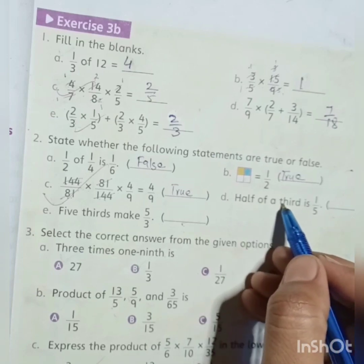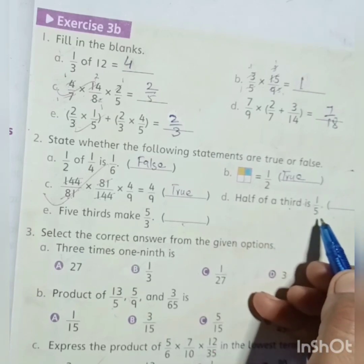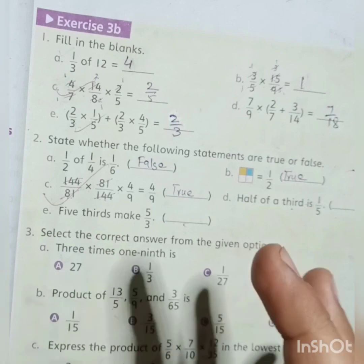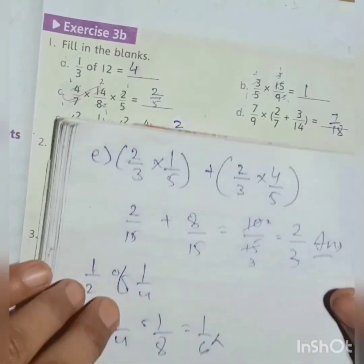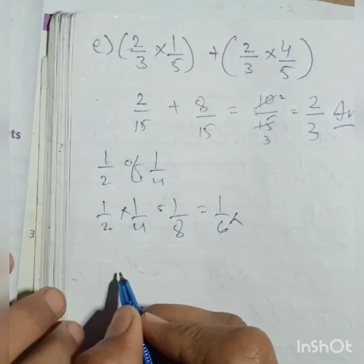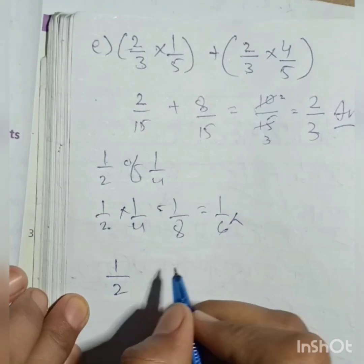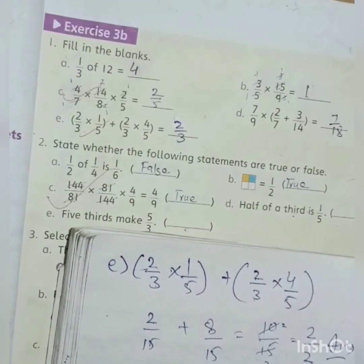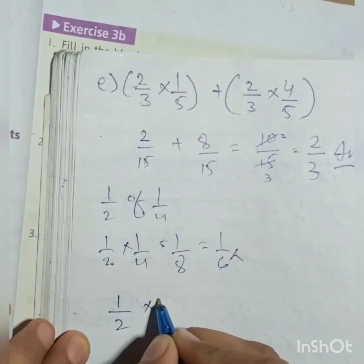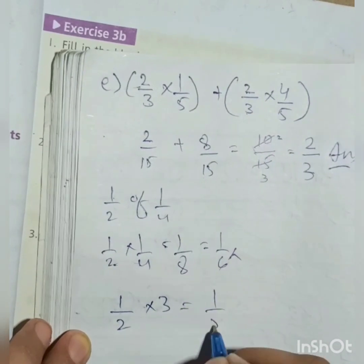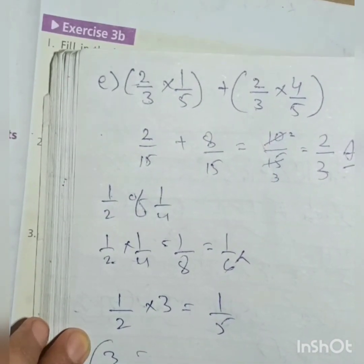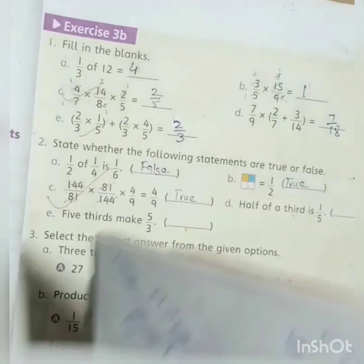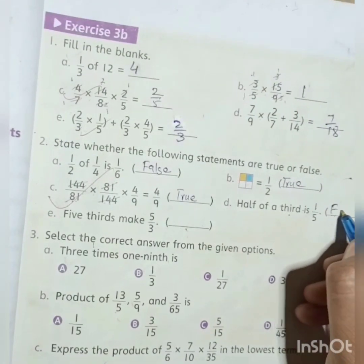Next: half of 1/3 is 1/5. We calculate: 1/2 × 1/3 = 1/6. The denominator is 6, not 5. So 1/6 ≠ 1/5. This statement is False.